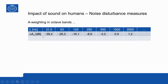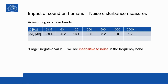This table shows the A-weightings in octave bands. For the octave band with center frequency 31.5 Hz, the A-weighting is minus 39.4 dB, and so on. At 1 kHz the value is 0. A large negative value means we are relatively insensitive to noise in that particular frequency band. From this table, we are most sensitive in the 2 kHz octave band.